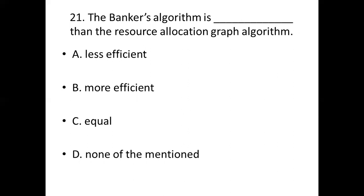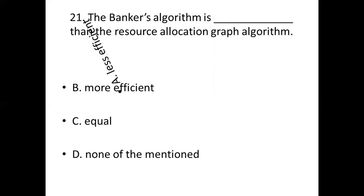Twenty-first bit. The Banker's algorithm is dash than the resource allocation graph algorithm. Option A: Less efficient. Option B: More efficient. Option C: Equal. Option D: None of the mentioned. Answer: Option A, Less efficient.